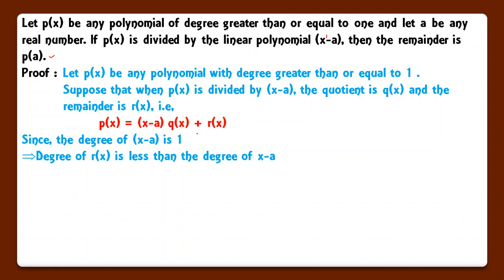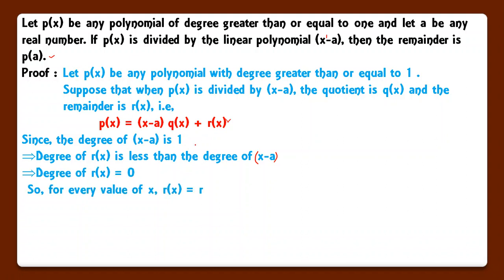Since the degree of x − a is 1, the degree of r(x) must be less than 1. The remainder's degree is less than the divisor's degree — we keep dividing until the remainder's degree is smaller than the divisor's degree. Since degree of x − a is 1, the degree of the remainder must be 0, meaning r(x) is a constant r. So for every value of x, r(x) = r — a constant.